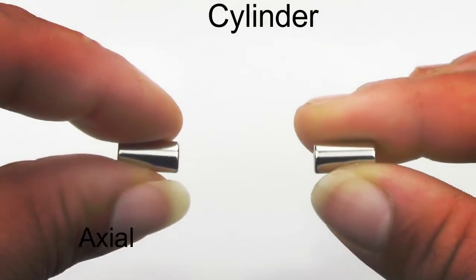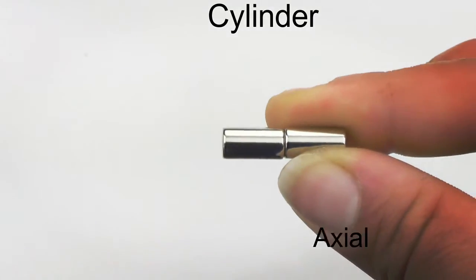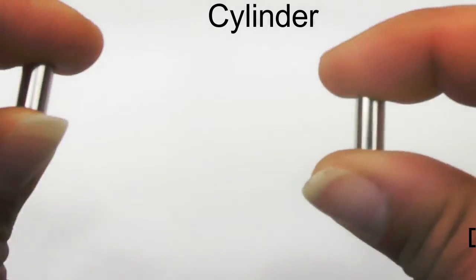Axial cylinders are attracted to their flat ends. Diametric cylinders are attracted to their round edges.